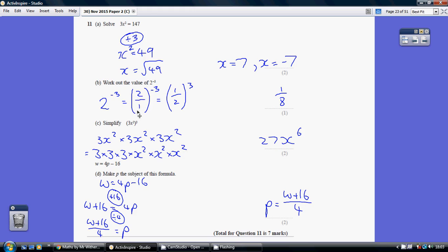So the 1 goes to the top, the 2 goes to the bottom. So that sorts out the minus. So at this point we've got 1 over 2 to the power of 3. So we cube the top number, cube the bottom number.